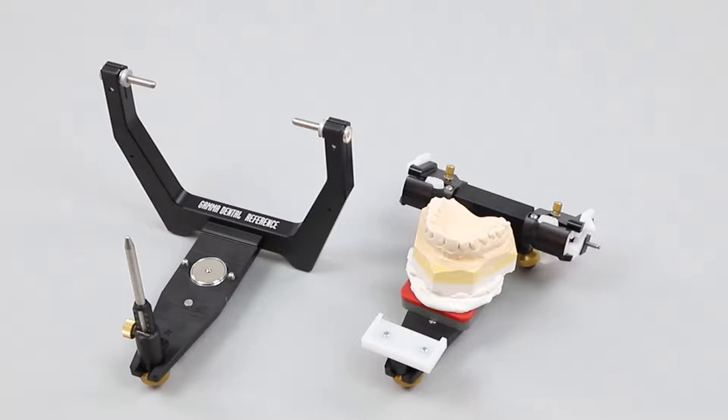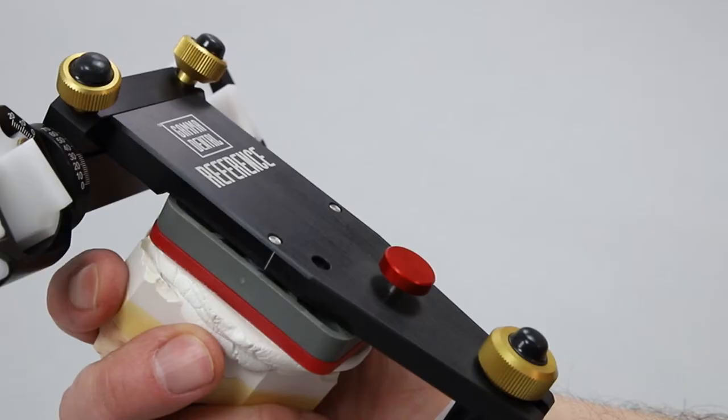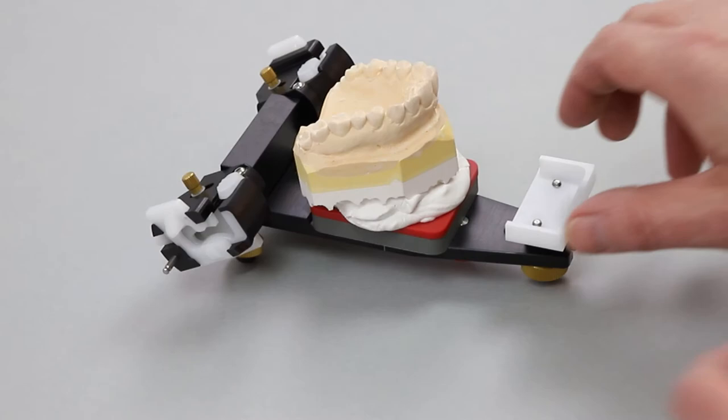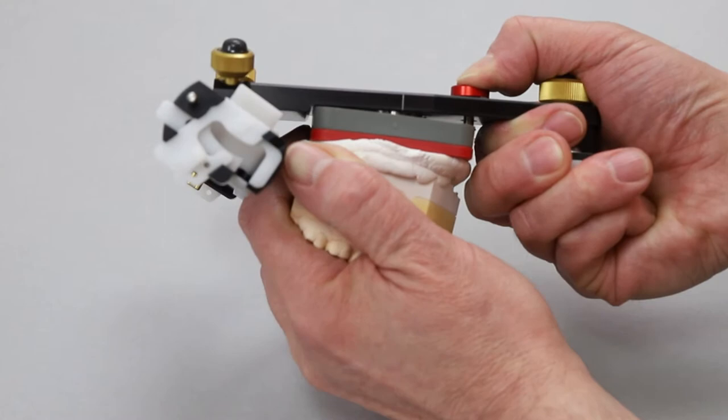This is the upper member holding the maxillary cast, and here we can see the lower member for holding the mandibular cast. On the outer side of the articulator there are two red ejector pins for correct and comfortable takeout of the articulated models.